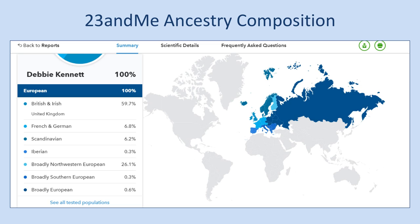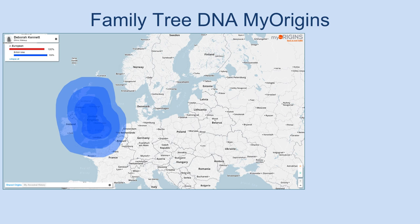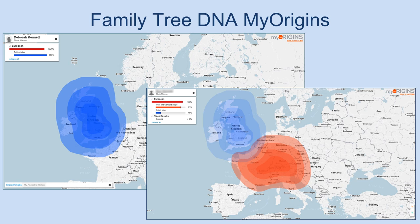At 23andMe I am 59.7% British and Irish with some French and German, some Scandinavian, and broadly Northwest European. At MyHeritage I have a nice 12% Italian that no one else seems to detect. At Family Tree DNA I am now 100% British while my husband, who has all-British ancestry, comes out at only 15% British. But if you look at the broader picture, all the results give this broad picture of Northwest European ancestry — the big details are accurate, it's the finer details that aren't quite so reliable. You just cannot capture the complexity of someone's ancestry with a simple DNA test.